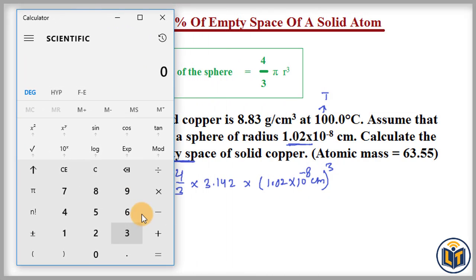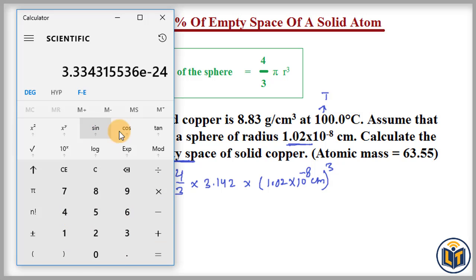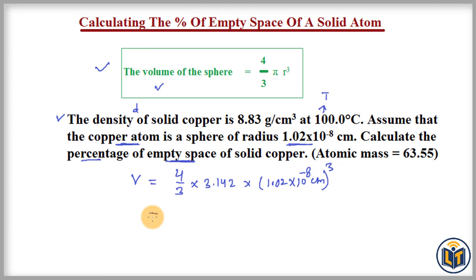Using the calculator, we plug in 1.02 × 10⁻⁸ and cube it, multiply by 3.142 (π), then multiply by 4 and divide by 3. The value we get, written in scientific notation, is 4.45 × 10⁻²⁴ centimeters cube. This is the volume of one copper atom.